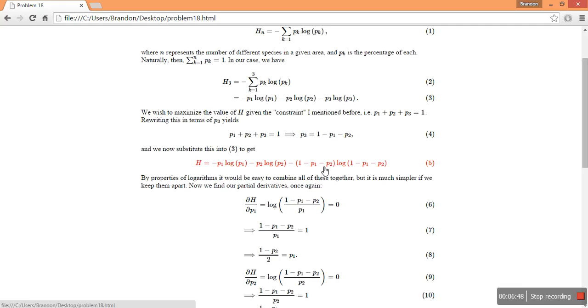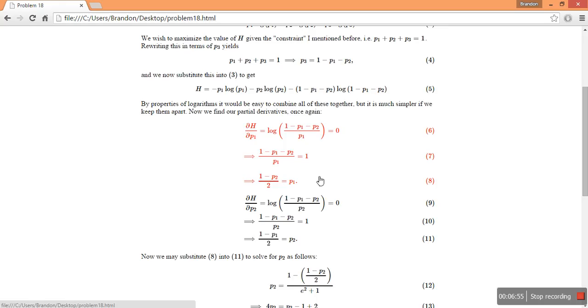So we're going to take the partial derivative of our diversity index with respect to these two percentages. And we find, after some simplification, I worked these out ahead of time, that all of our, that our partial derivatives simplified to just logarithms of quotients.